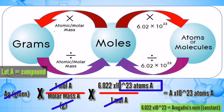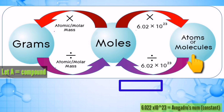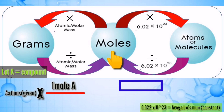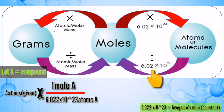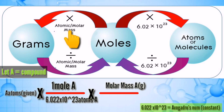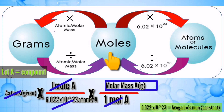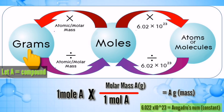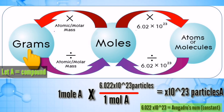After that, we can cancel out the grams and the moles, leaving the number of atoms of that substance. As a reverse, if our given is the number of atoms, molecules, or particles, we multiply by one mole of that substance, divide by 6.022 times 10 to the 23rd power, multiply by the molar mass of compound A, then divide by one mole of that compound — leaving grams. If the given is already in moles, you can do a shortcut for mole to mass or mole to number of particles.